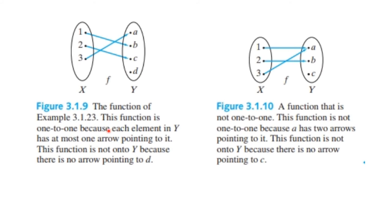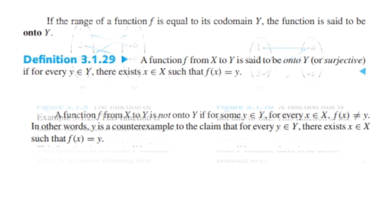Here's an example of a function that is one-to-one, because each of these elements goes to exactly one element in the range. This is not one-to-one because both one and three are being mapped to a. If the range of a function is equal to its codomain, we say it's onto Y. A function f from X to Y is onto Y, or surjective, if for every y in Y, there exists an x in X such that f(x) equals y. A function is not onto if there is some y such that for every x in X, f(x) does not equal y. In other words, y is a counterexample to the claim.